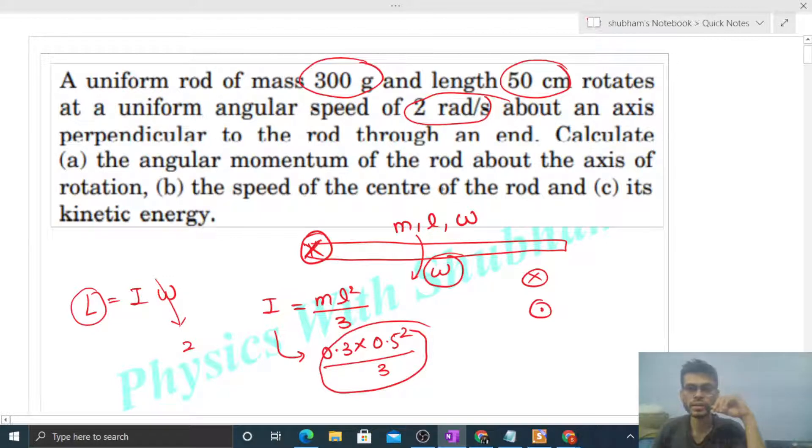Calculate the speed of the center of the rod. How to find the speed of center? That is simply r into omega. This rod is in pure rotation, so kisi bhi point ka linear speed is r, where r is the perpendicular distance of that point. For center it will be L/2.